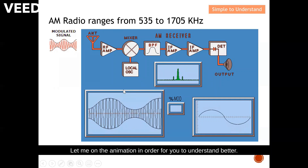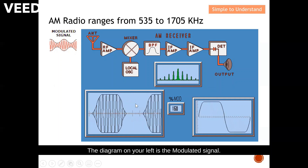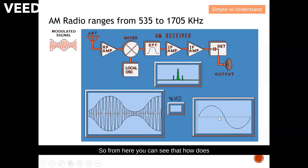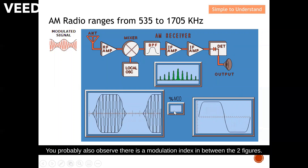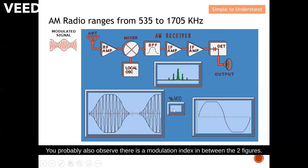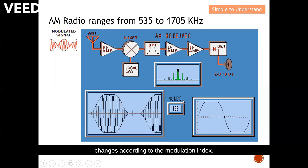Let me turn on the animation for better understanding. The diagram on the left is the modulated signal, and the diagram on the right is the modulating signal. You can see how the modulated signal changes according to the modulating signal, and also observe the modulation index shown between the two figures — and how the modulated signal changes according to it.